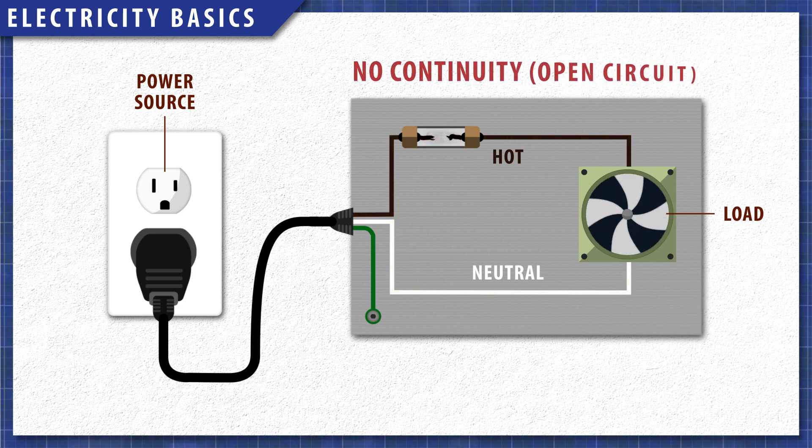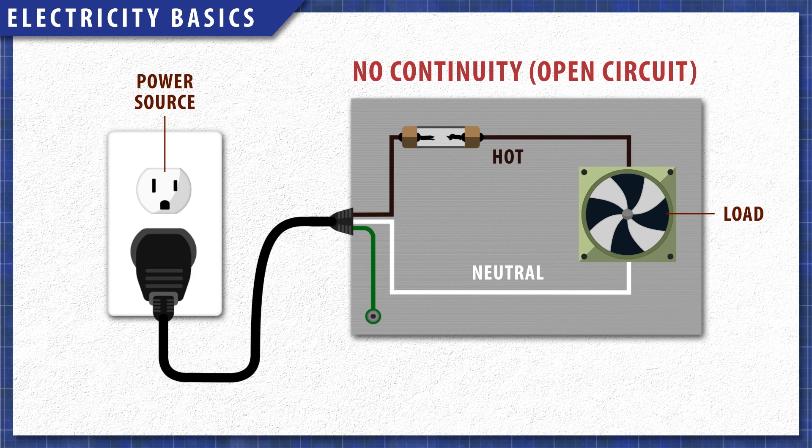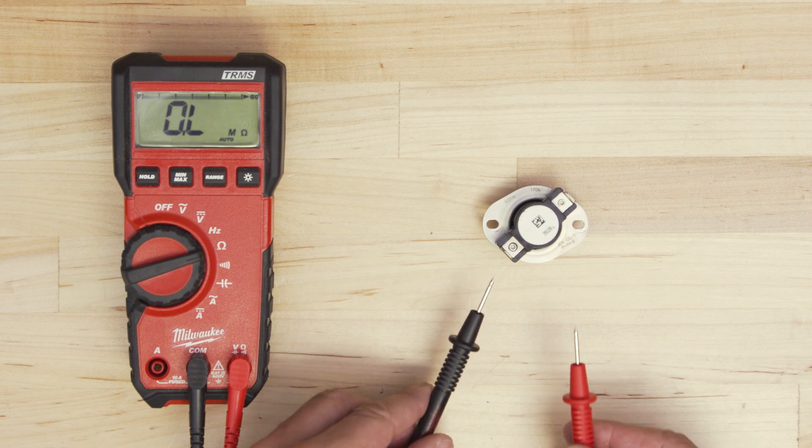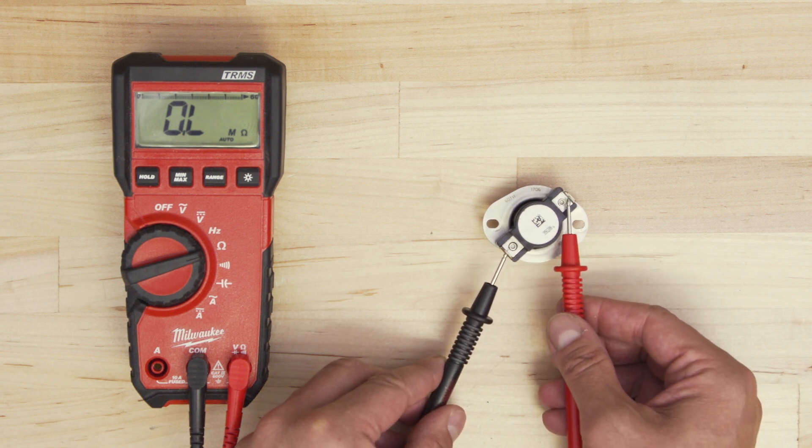When a component fails, it creates an open circuit, as there is no continuity. The appliance will not work properly until that component is replaced. In this episode, we'll learn how to test components for continuity.